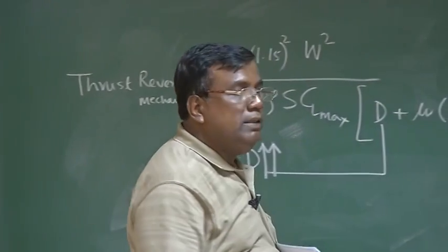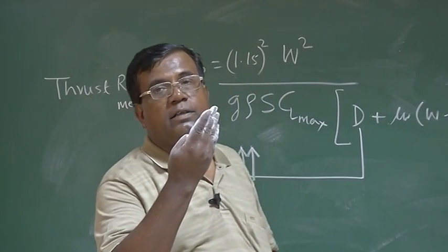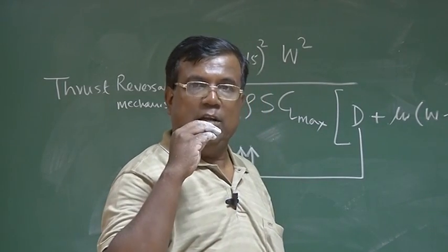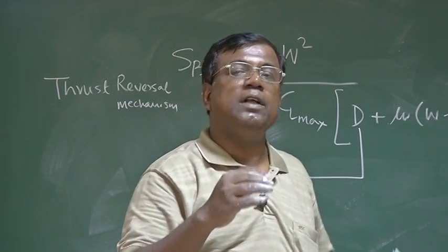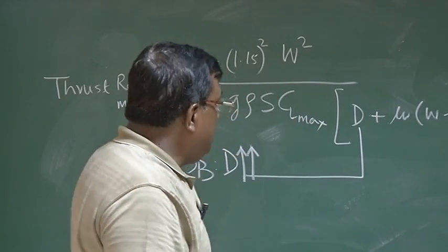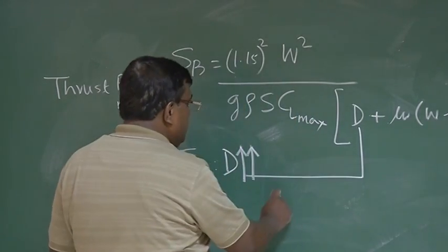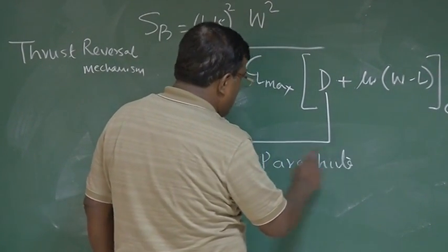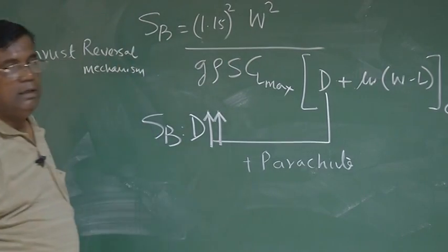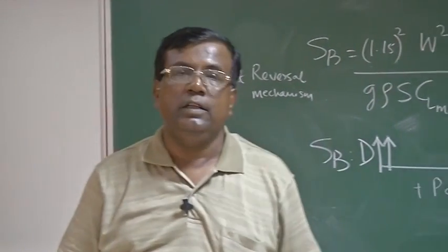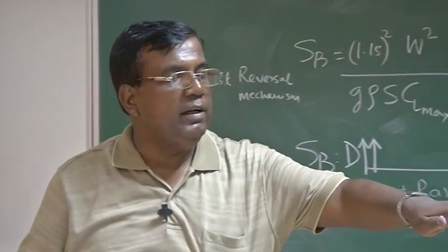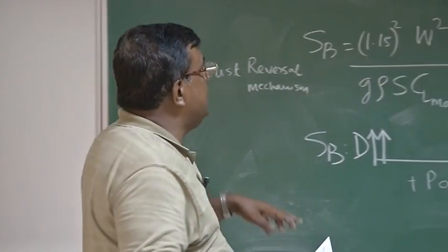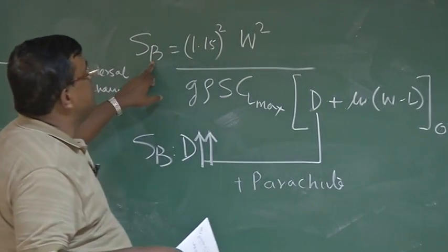Also, I can increase drag by adding parachute, which I was telling, you will find most of our fighter airplane. They will be using parachute. The moment they land, after certain distance, the parachute will be deployed, which will give enough drag. And that will again increase this value. So, the S_B braking distance will reduce.